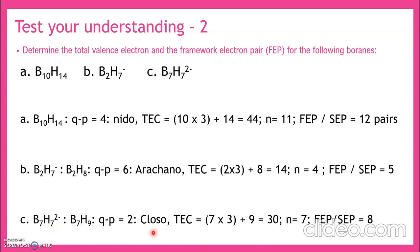Finally: B7H7^(2−). This is a closo structure, so p equals n. Electron count: 7×3 + 7 + 2 = 30. Since it is closo, n = 7. Framework electron pairs = 7+1 = 8. This confirms the relationships: n is the number of corners in the parent polyhedron, n+1 gives the framework electron pairs, and n relates to p depending on cluster type.